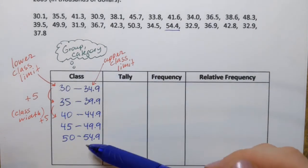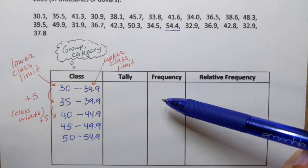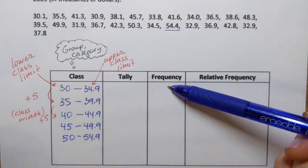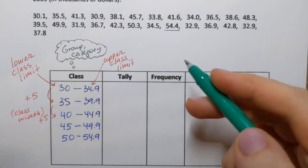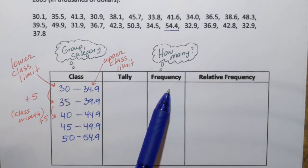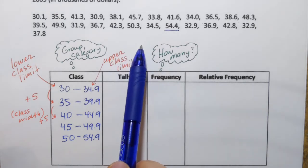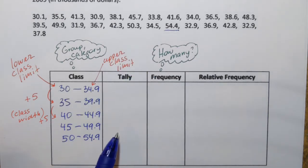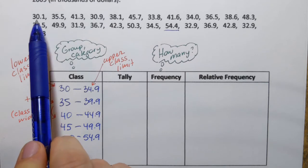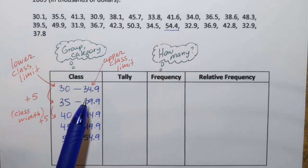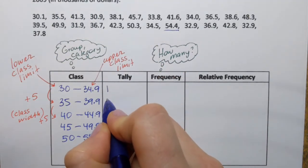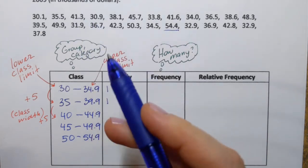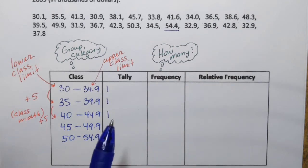Okay, so once we create these categories, we need to fill out the column that's called frequency. Now what is frequency? Well, basically, frequency is the number of observations in each class. So frequency is answering the question, how many? In other words, I need to count how many observations in this data set are between 30 and 34.9, and so on and so forth. And for this kind of counting, we're going to use tally. So we're just really going to go one by one through this data set. So 30.1. So 30.1 belongs to this first class. I'm going to put a tally mark. Then 35.5. That's the second class. I put a tally mark. And so on and so forth. 41.3. That's the third class. So I'm going to do that quickly, and then we'll continue.